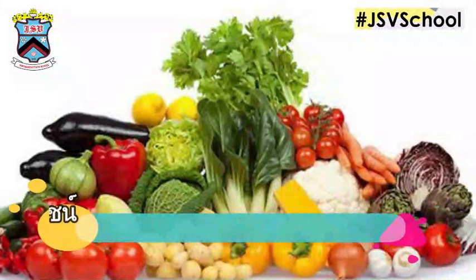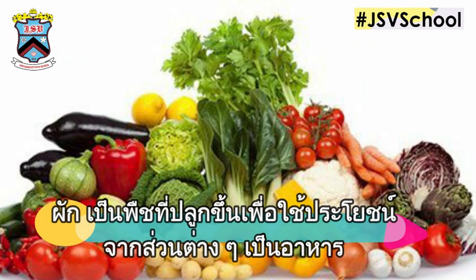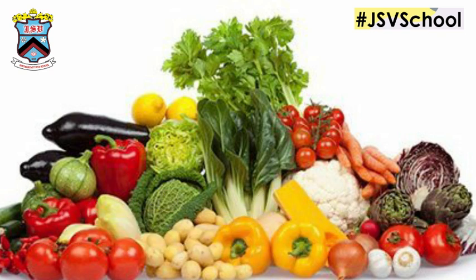ผัก เป็นพืชที่ปลูกขึ้นเพื่อใช้ประโยชน์จากส่วนต่างๆ เป็นอาหาร เช่น ราก ต้น ใบ ดอก ผล เมล็ด และหัว ผักส่วนใหญ่เป็นไม้ล้มลุก เจริญเติบโตเร็ว อายุสั้น เช่น ขิง ข่า ตะไคร้ ผักกาด ผักบุ้ง พริก มะเขือ ฟักทอง แตงกวา ส่วนผักที่เป็นไม้ยืนต้น มีอายุยืน เช่น สะตอ ชะอม กระถิน มะรุม ผักหวาน มะกรูด ขี้เหล็ก